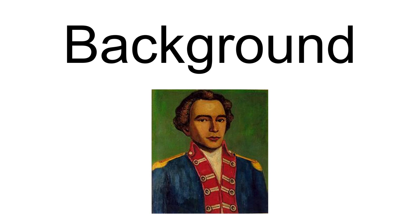In February 1778, the Americans launched their first expedition into the Ohio country in an attempt to neutralize British activity in the region. General Edward Hand led 500 Pennsylvania militiamen on a surprise winter march from Fort Pitt towards the Cuyahoga River, where the British stored military supplies distributed to Indian raiding parties. However, adverse weather conditions prevented the expedition from reaching its objective. On the return march, some of Hand's men attacked peaceful Delaware Indians, killing one man and a few women and children, including relatives of the Delaware chief Captain Pipe.